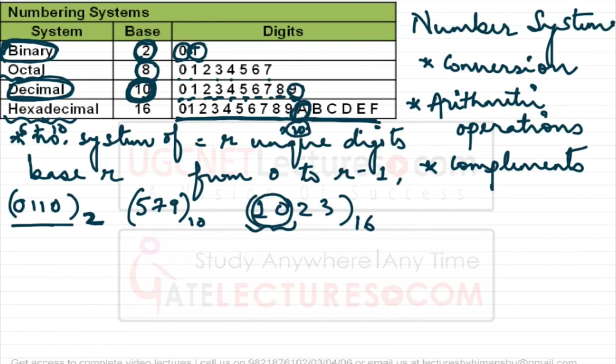Someone else might interpret the same digits differently — seeing four separate symbols instead of two. There is confusion and ambiguity with this type of coding. To solve this, we take the 10 unique symbols 0 to 9 and then add alphabets for the remaining values.